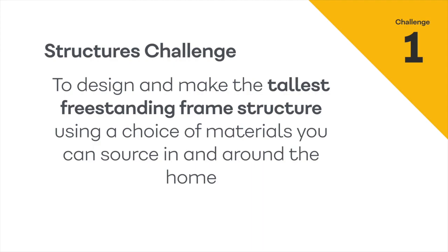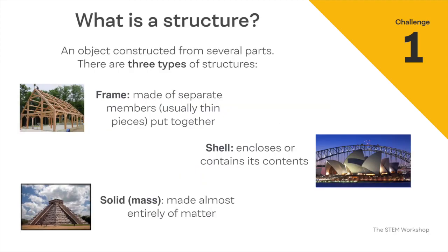You are designing and making the tallest freestanding structure and you can use a choice of materials in and around your home. A structure is an object constructed from several parts. There are three types of structures: frame structures made from separate members, shell structures which enclose or contain their contents similar to the Sydney Opera House, and solid structures where most or all of the structure is made of matter. Today we're going to explore frame structures.